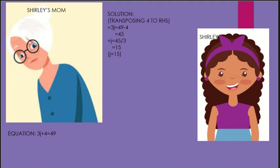The solution: first, transpose 4 to the RHS. Then 3J equals 49 minus 4, which equals 45. Then transpose 3 to the RHS. This gives us 45 divided by 3, which is 15. Therefore, J equals 15.